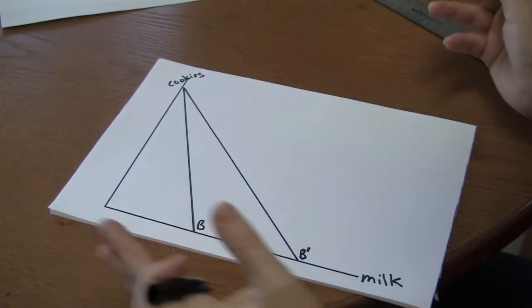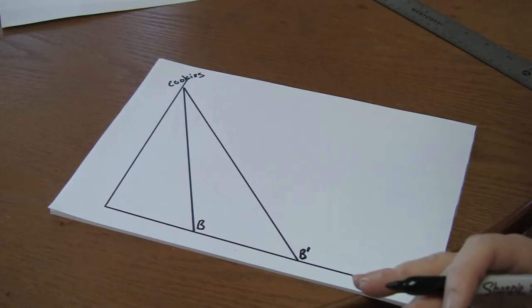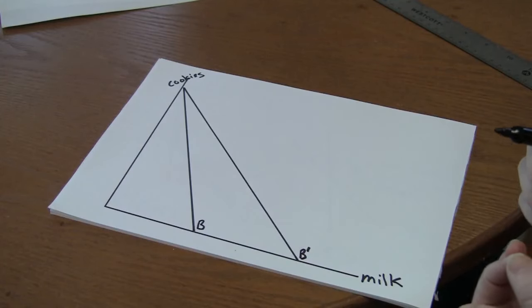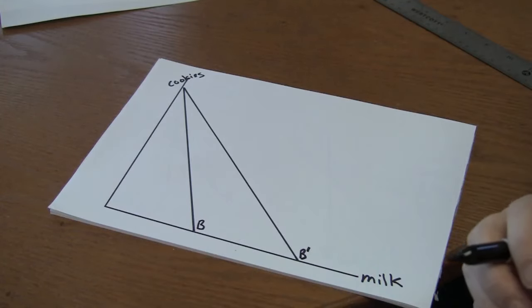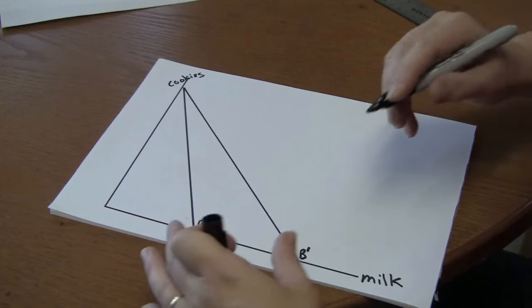Next thing to do is to show the consumer's optimal choice before and after the price decrease. The optimal choice is where the indifference curve is just tangent to the budget constraint.